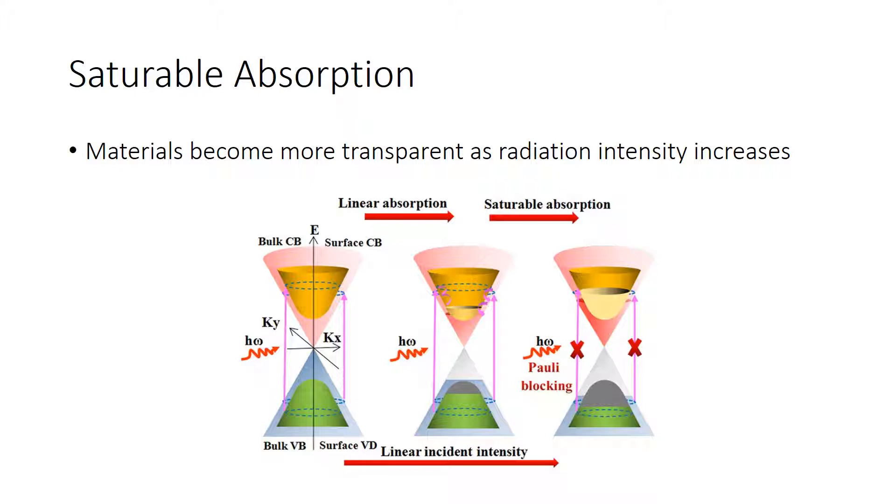As more radiation hits the material, more carriers get promoted until upper energy levels fill up. When this happens, excess radiation is no longer absorbed by the material and goes through. In this case, the material becomes transparent to excess radiation.